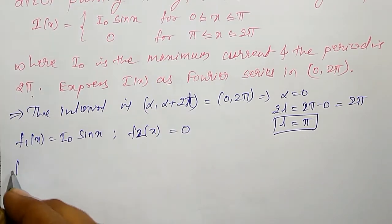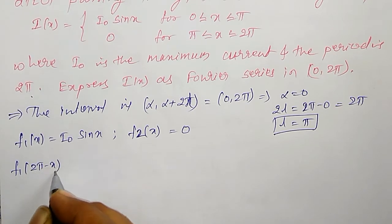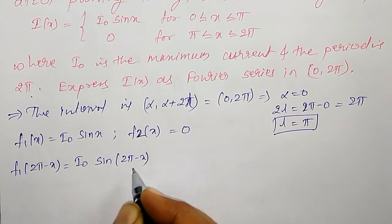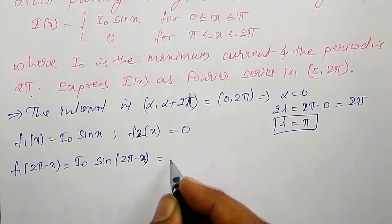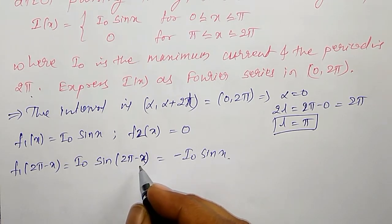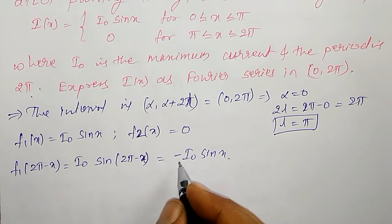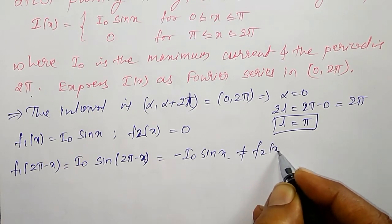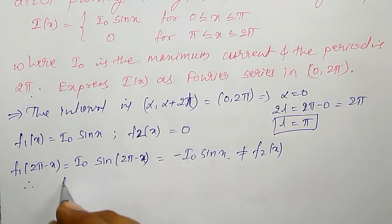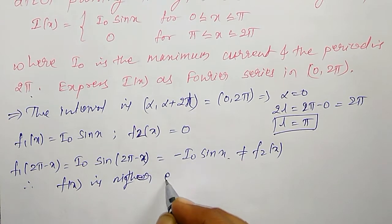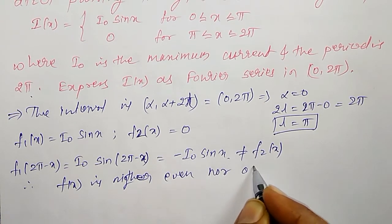To check, in F₁(x) I replace x with 2π − x: that is I₀ sin(2π − x) = −I₀ sin x, which is in the fourth quadrant where sine is negative. This is not equal to F₂(x), therefore F(x) is neither even nor odd.